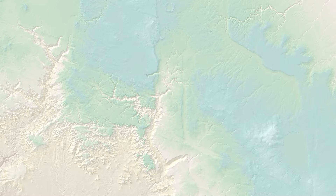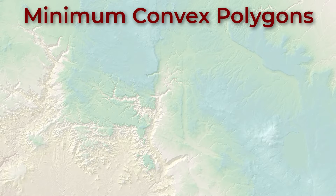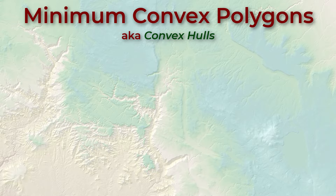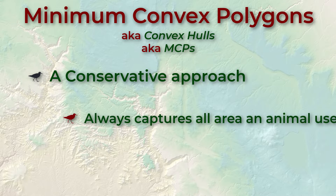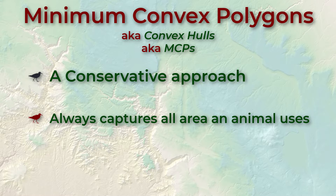Let's move on to the next common method for delineating wildlife habitat: the minimum convex polygon, also called the convex hull, or MCP. This is a very common and simple method to define home ranges. The MCP is one of the simplest and most conservative ways to estimate home range — conservative meaning it usually delineates more area than the animal actually uses. Given any set of animal locations, it's never going to delineate less than the total area used by the animal.